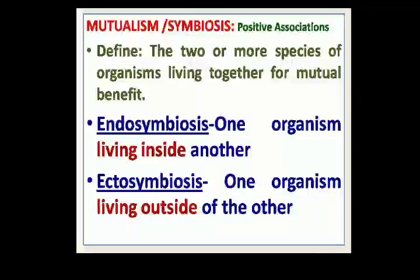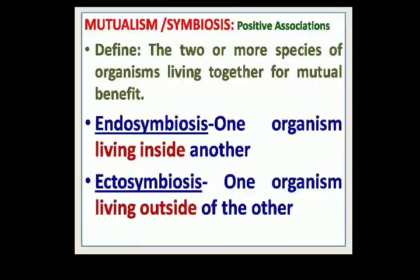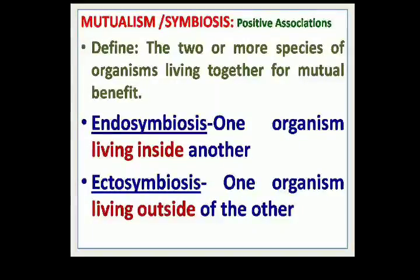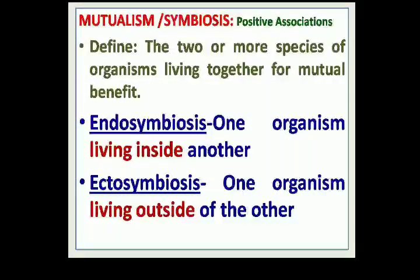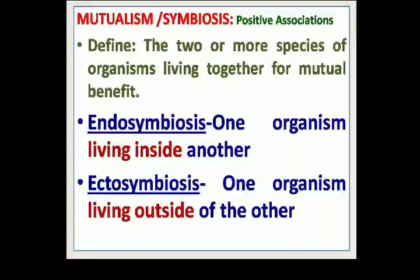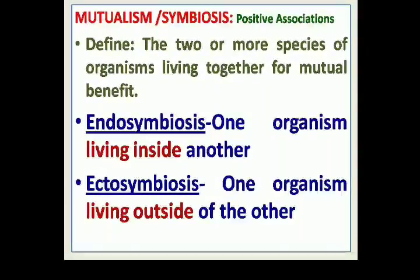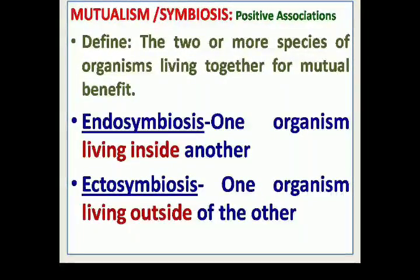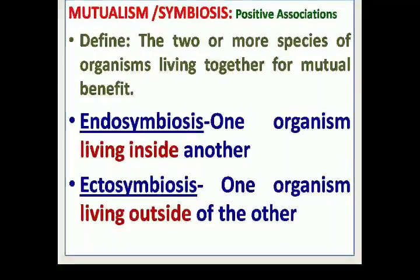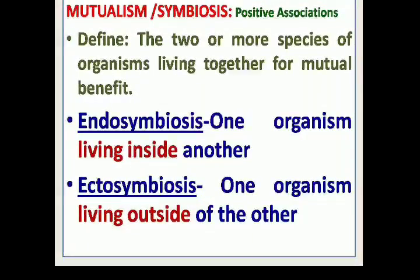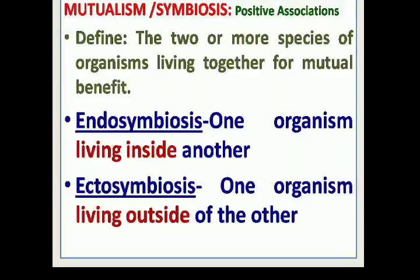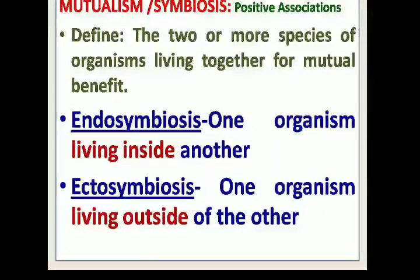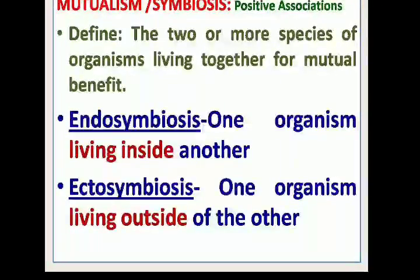The first association is Mutualism or Symbiosis. It is a positive association in which both partners benefit from each other. This association is formed between two or more species of organisms living together for mutual benefit. These associations are divided into Endo-Symbiosis, where one organism lives inside another, and Ecto-Symbiosis, where one organism lives outside the other or in joint organization.